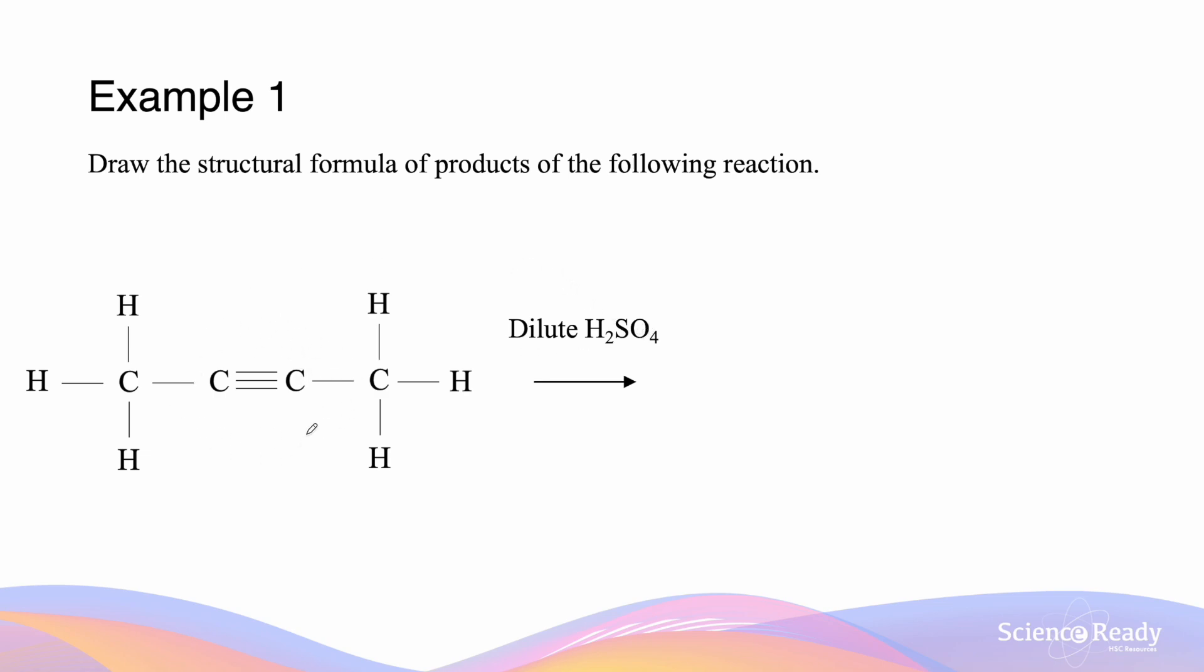Now if we're looking at the alkyne position here, we can see that the addition of water can only produce a ketone, and the reason for that is because both of the carbons that are involved in the triple bond are not in a terminal position. So what we should expect is we should expect first only one product.